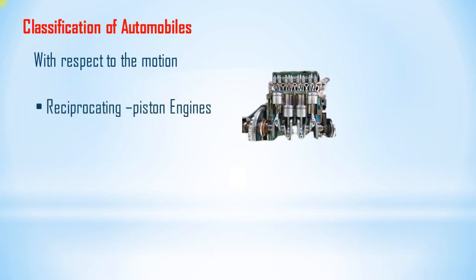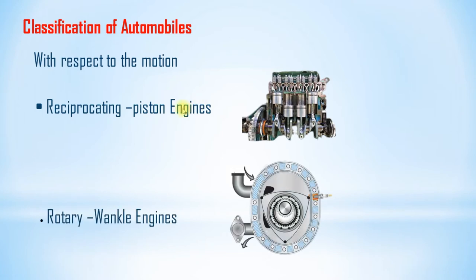The next classification is with respect to motion. In reciprocating piston engines, the reciprocating motion of the piston is converted into rotary motion, which is used to propel the vehicle. In another category, rotary engines are used in some vehicles — they are generally costly and used in some racing cars.